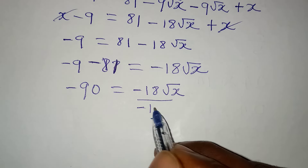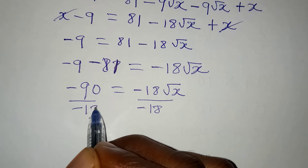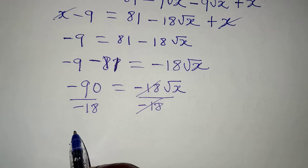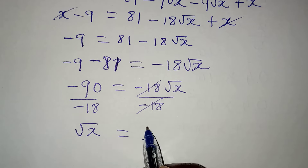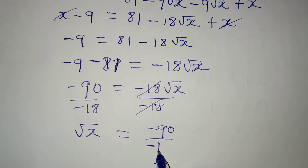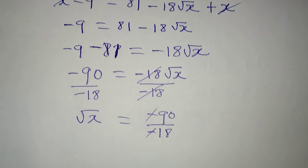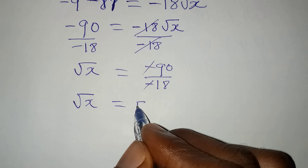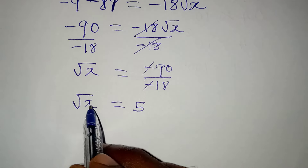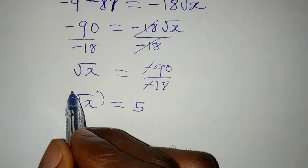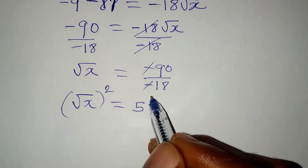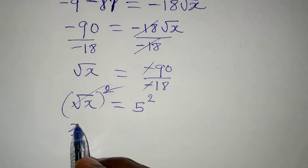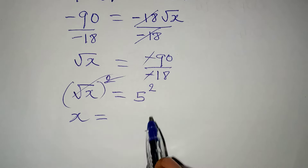Dividing both sides by minus 18, the negatives cancel and root x equals 90 divided by 18, which equals 5. To find x, we square both sides: the square root cancels and x equals 5 squared, giving x equals 25.